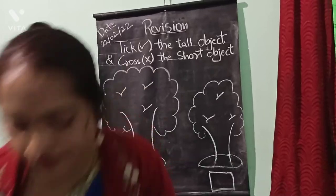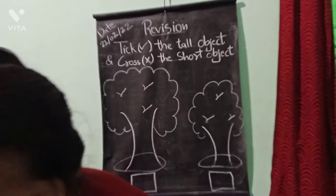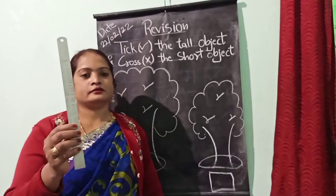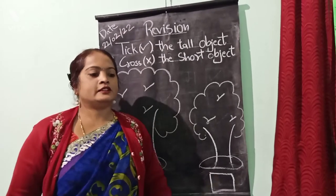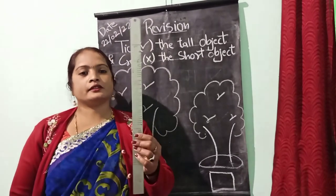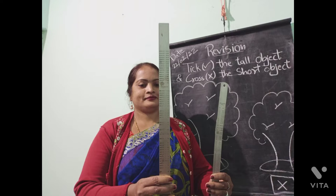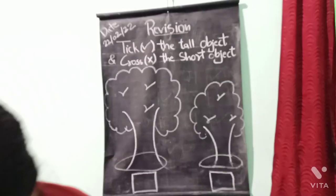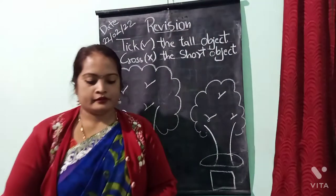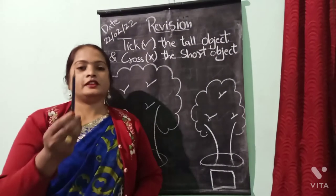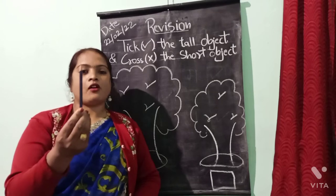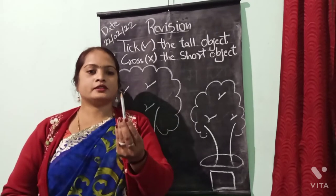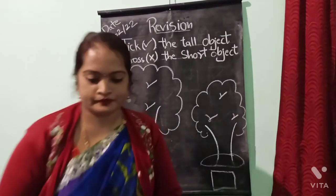For example, this is short. This is tall. And this is tall. This is short. Okay, children?